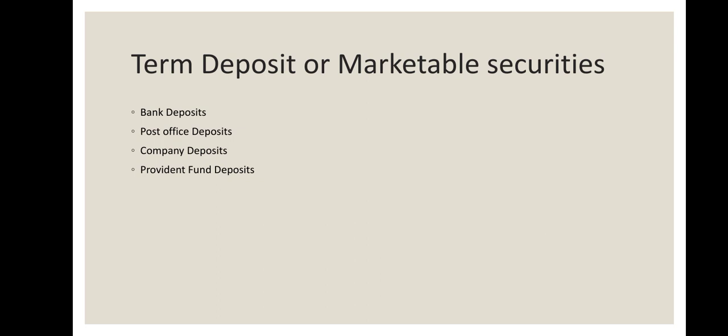Let us discuss what bank deposits are. It is one type of savings that people normally do. There are three types of deposits available in all types of banks — whether commercial banks or non-commercial banks, nationalized or non-nationalized banks, such as cooperative banks, private banks, and public banks.